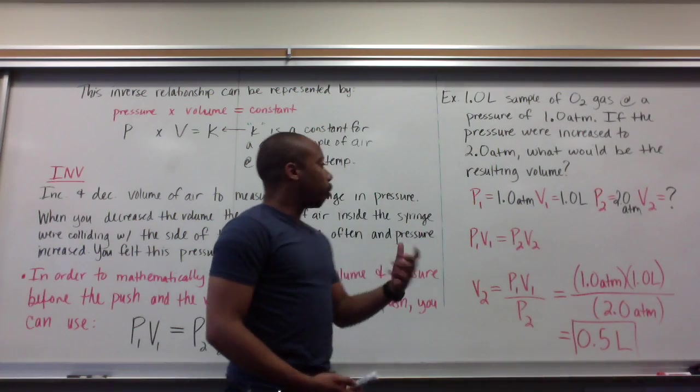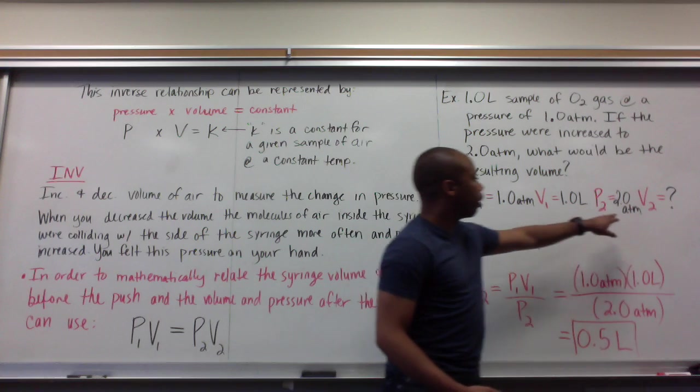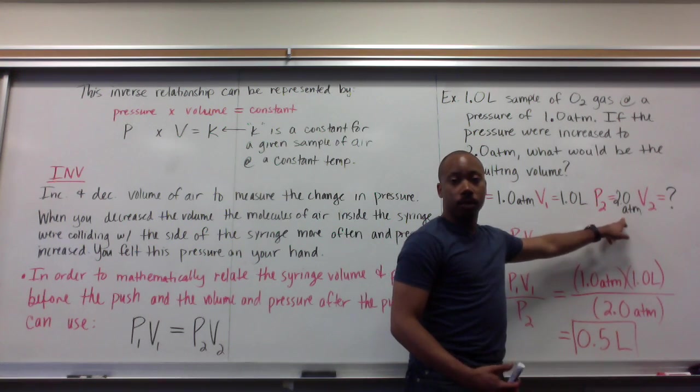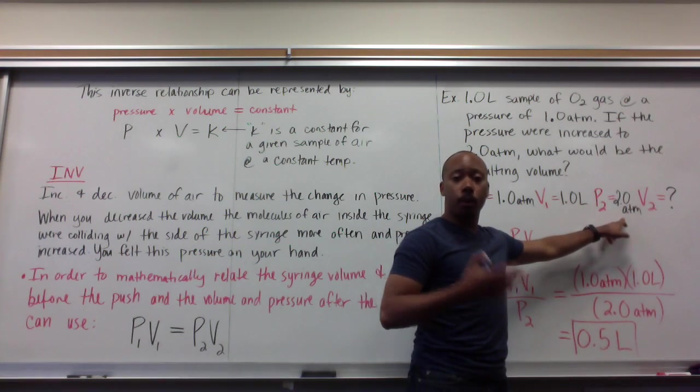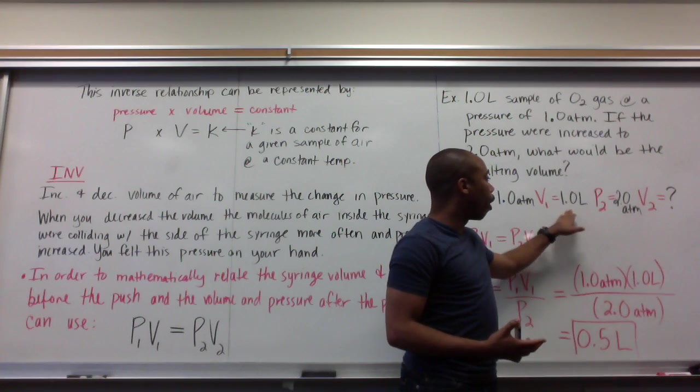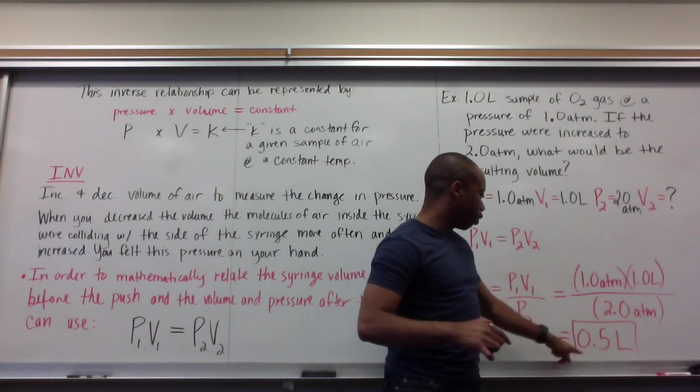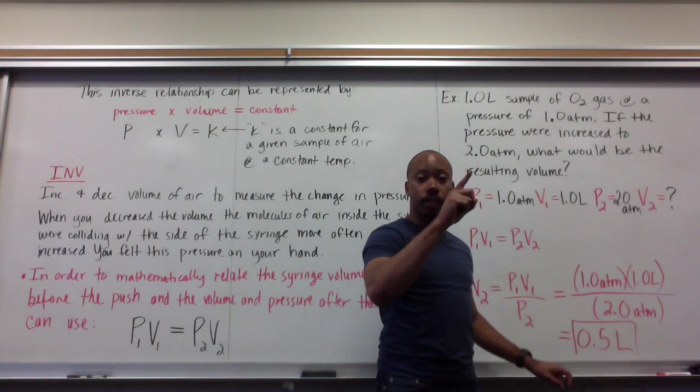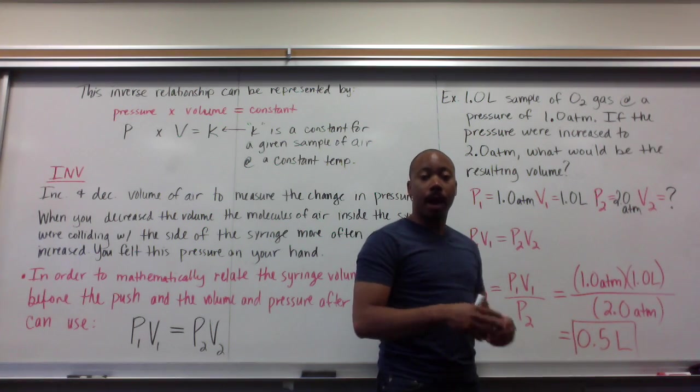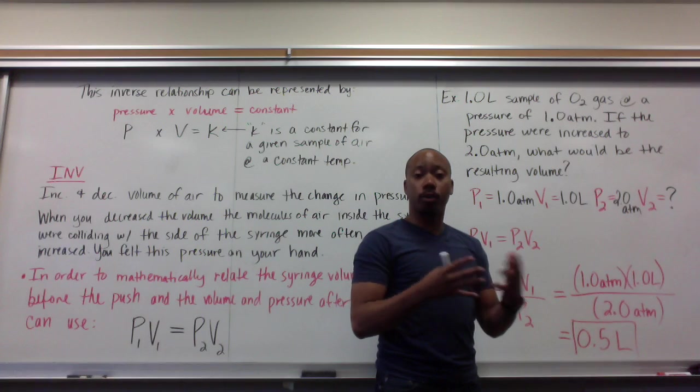If my pressure is doubled, I go from one atmosphere to two atmospheres. In an inversely proportional relationship, that means that my volume must be halved. So from one liter to 0.5 liters. As one increases, the other decreases by the same amount, proportionally.